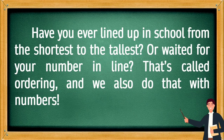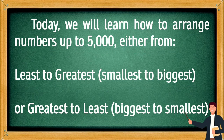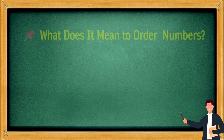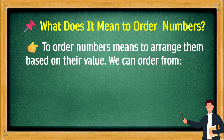Have you ever lined up in school from the shortest to the tallest, or waited for your number in line? That's called ordering, and we also do that with numbers. Today we will learn how to arrange numbers up to 5,000, either from least to greatest or greatest to least. To order numbers means to arrange them based on their value.